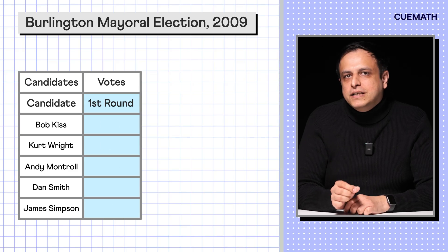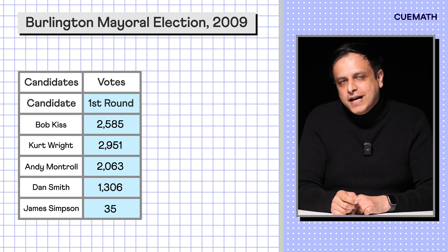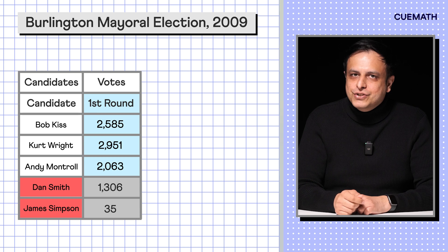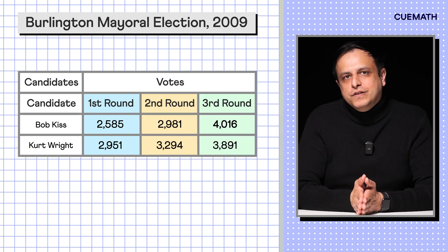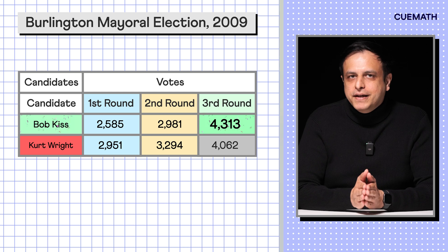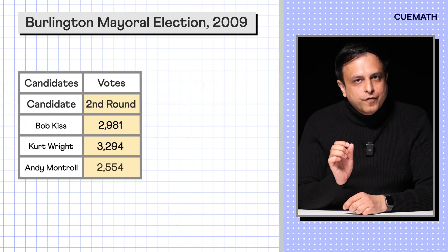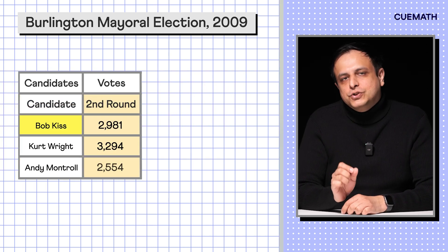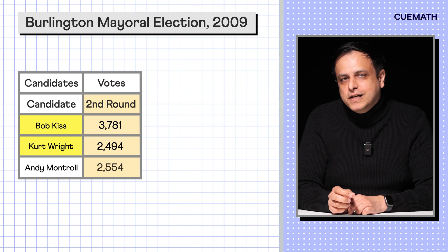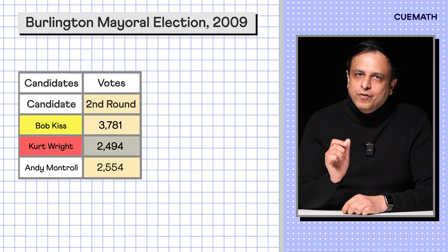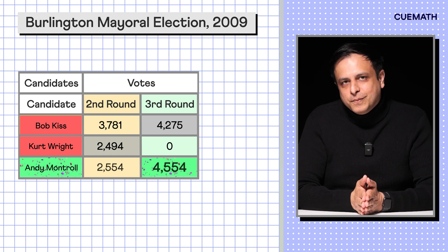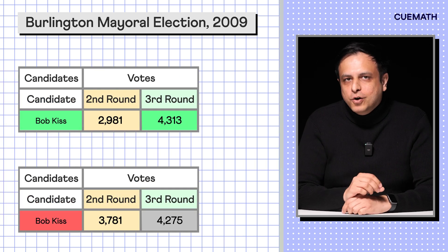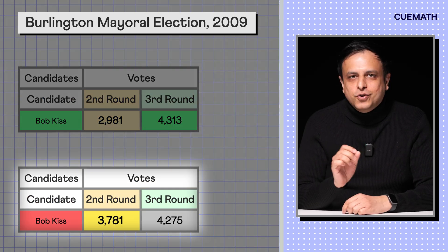Such scenarios can actually happen. In the 2009 Burlington mayoral election, a couple of candidates were eliminated in the first round. Finally, Montrol was eliminated and most of his votes went to Bob, making Bob the winner. But if Bob had gained more first choice votes from Kurt's supporters, Kurt would have been eliminated instead. And with his remaining votes favouring Montrol, Montrol could be the winner. In this twist, Bob would lose despite being in a stronger position.